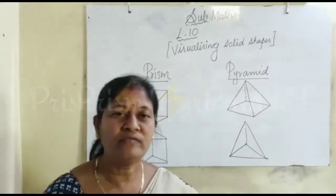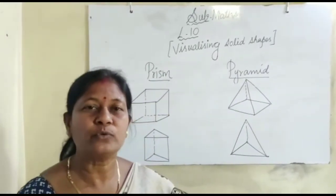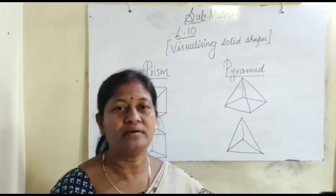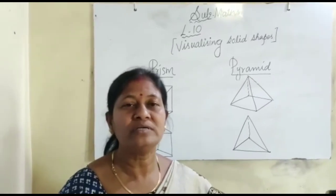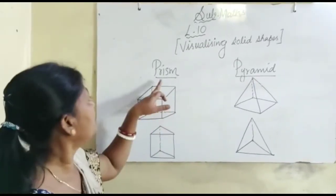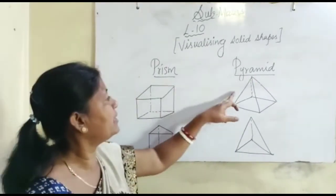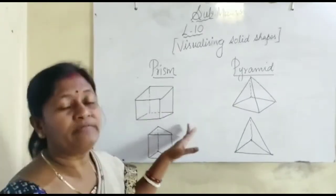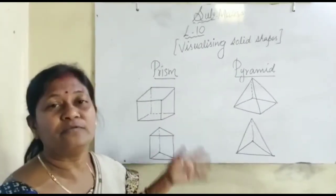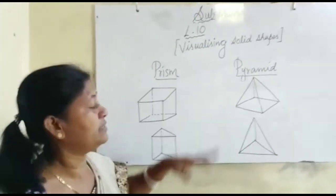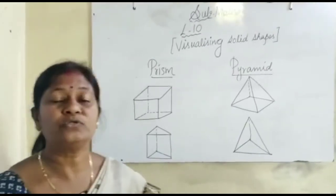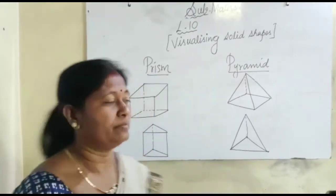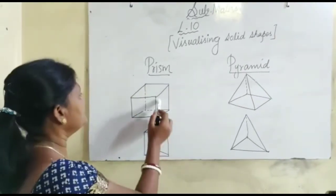Till now we have studied various examples of 2D shapes and 3D shapes. Now let me explain more about 3D shapes — for example, prism and pyramid. I will briefly explain the difference between a prism and a pyramid, and for that you should be able to learn what is meant by a prism.